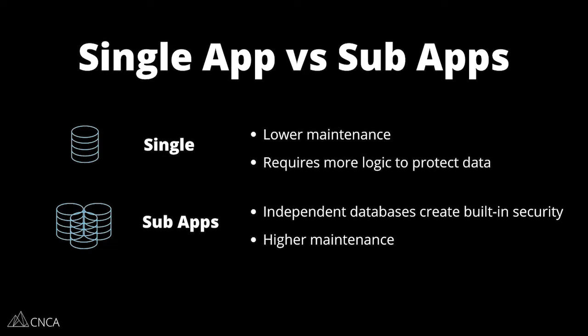When it comes to building out a multi-tenant structure in Bubble, you actually have two different paths that you can take. You can either build everything out within a single application — one database that is shared between all of your organizations — or you can use Bubble's sub-app system, which enables you to create independent applications for each of your organizations. With a single application, you're much more responsible for creating the right privacy rules to protect the data from leaking between organizations. You have to make sure that every single table and every single user is accounted for when it comes to reading or making changes to data. A single application is much lower maintenance compared to a sub-app, because everything is happening in one application and your logic always refers to the one app.